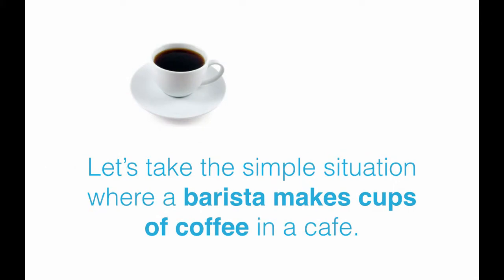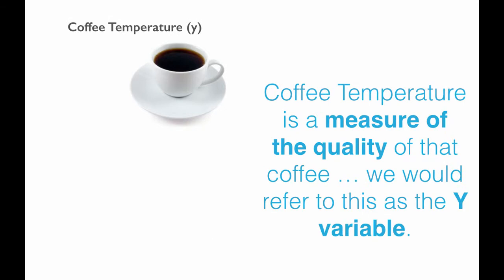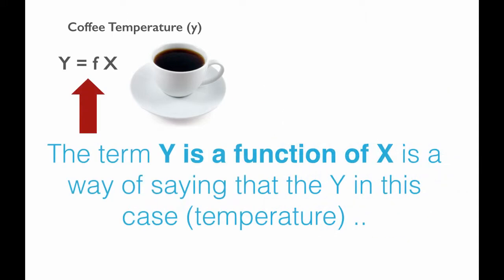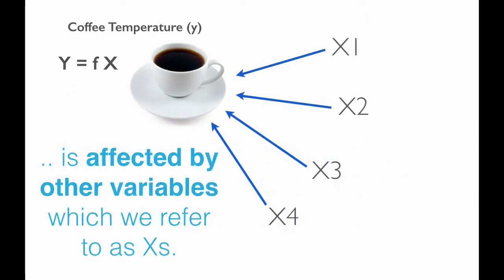Let's take the simple situation where a barista makes cups of coffee in a cafe. Coffee temperature is a measure of the quality of that coffee, and we would refer to this variable as the Y variable. The term Y as a function of X, or what we would refer to technically as the transfer function, is a way of saying that the Y — in this case temperature — is affected by other variables which we would refer to as the X's.